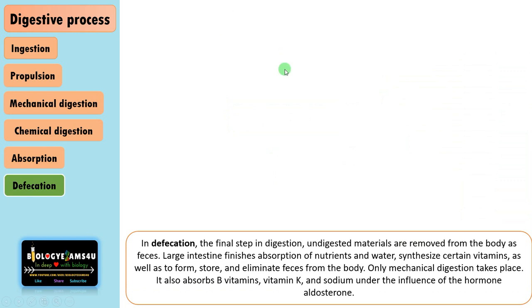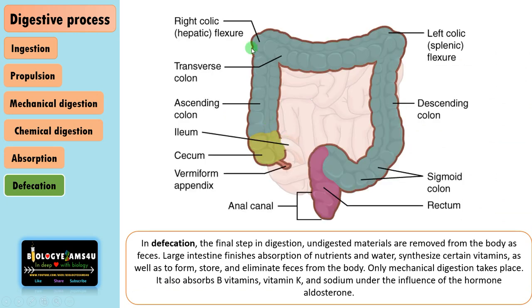The final process is defecation: the undigested matter is removed from the body as feces. The large intestine is involved in this process — it finishes absorption of nutrients and water, synthesizes certain vitamins using the bacterial flora present in it, and forms, stores, and eliminates feces. Its parts are the cecum, followed by the long colon, then the rectum where waste material is stored, and finally the waste material or feces is removed through the opening called the anus.